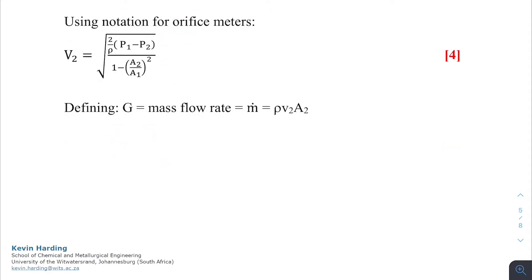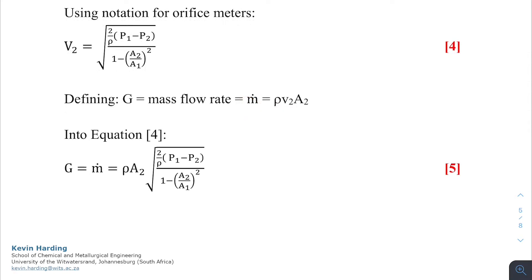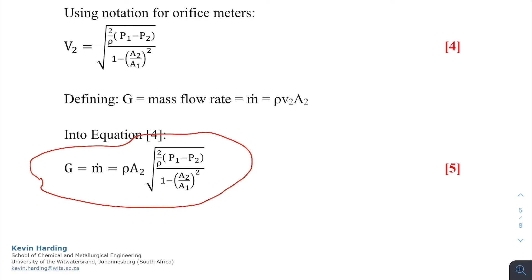From equation 4, we can define G — the mass flow rate, sometimes written as m-dot — which is equal to density times velocity, in our case v2, multiplied by area 2. Substituting that into equation 4, we now have an equation where the mass flow rate G or m-dot equals density times area 2 times the square root of the same term as before. We call this equation 5.